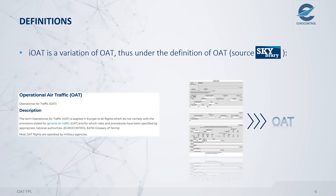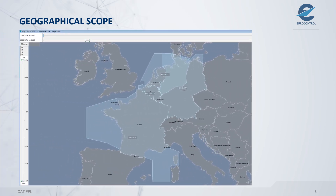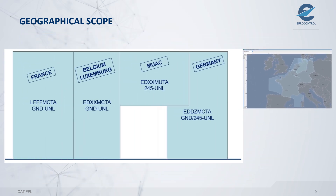Now let's look at the geographical scope. The initial implementation is for three pilot states: France, Belgium, and Germany. You can see the lateral limits. The vertical limits are as follows. Note that Belgium encompasses Luxembourg. MUAC is included, and the Netherlands from ground to flight level 245 are not included. An IOAT flight shall always remain laterally and vertically within the airspace described here.